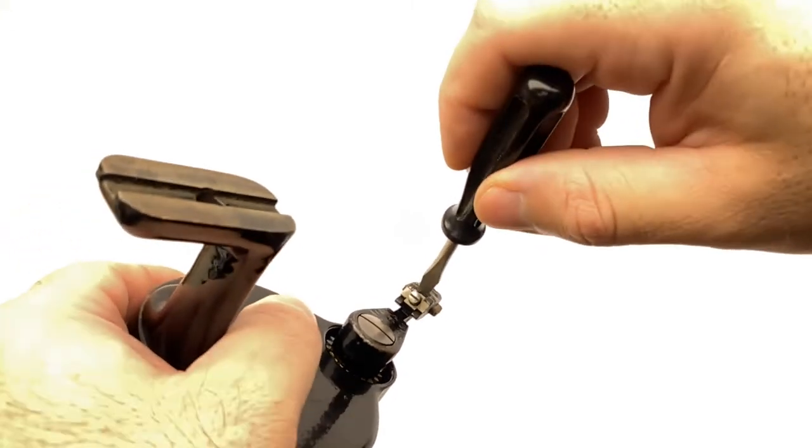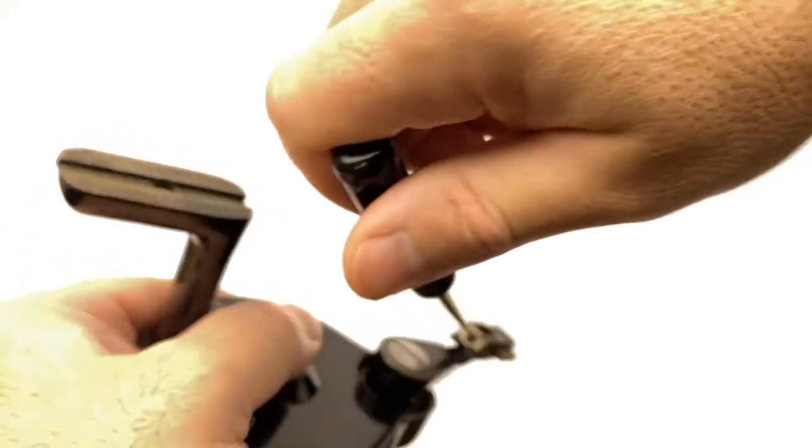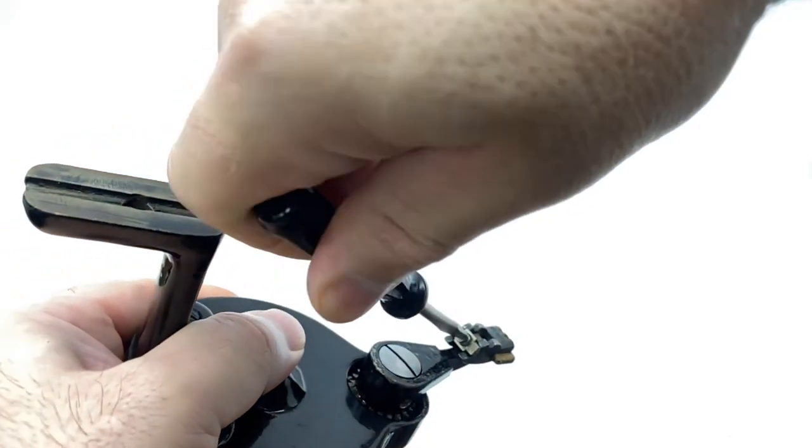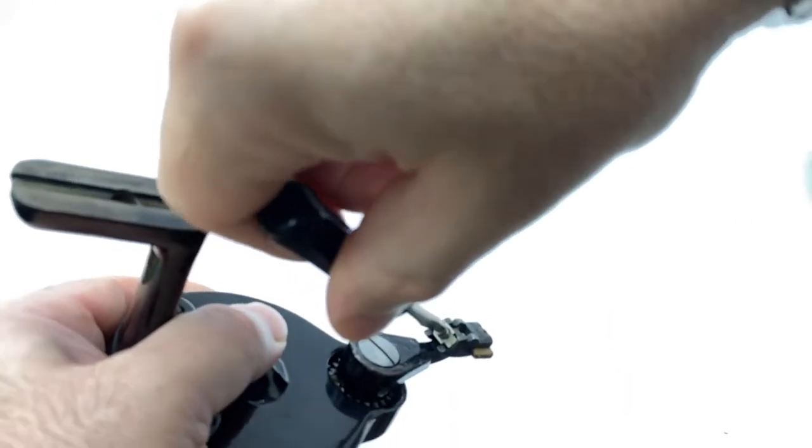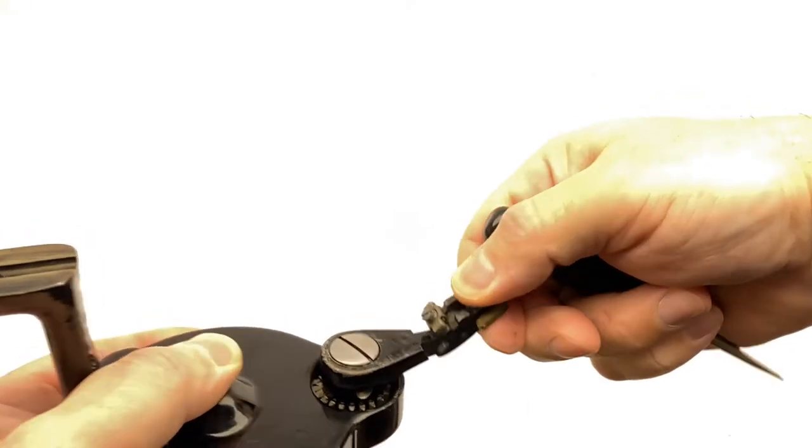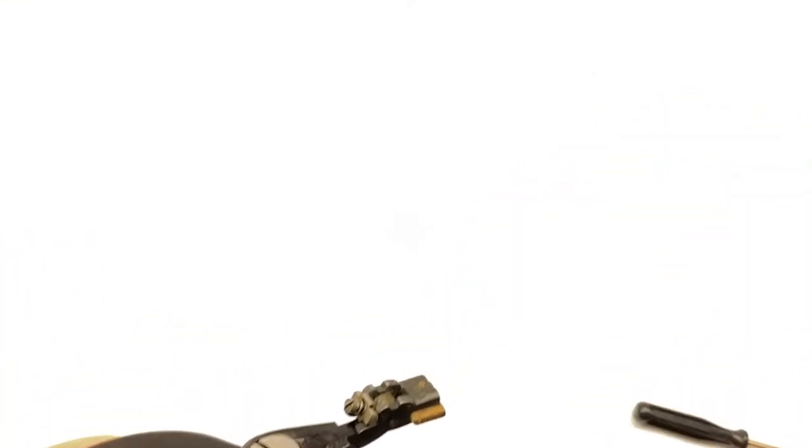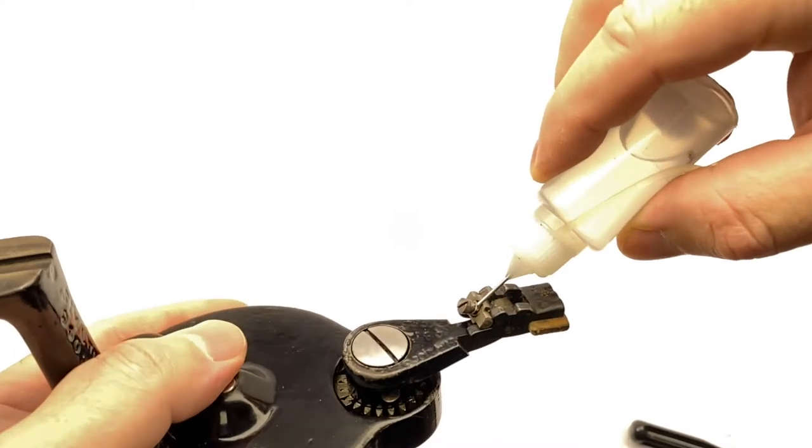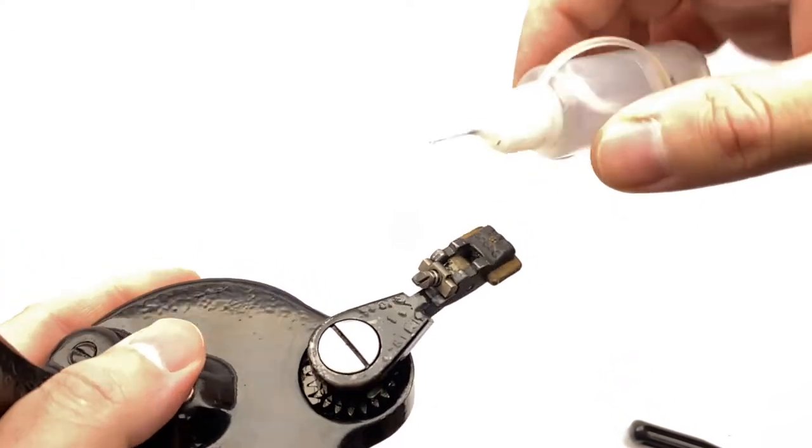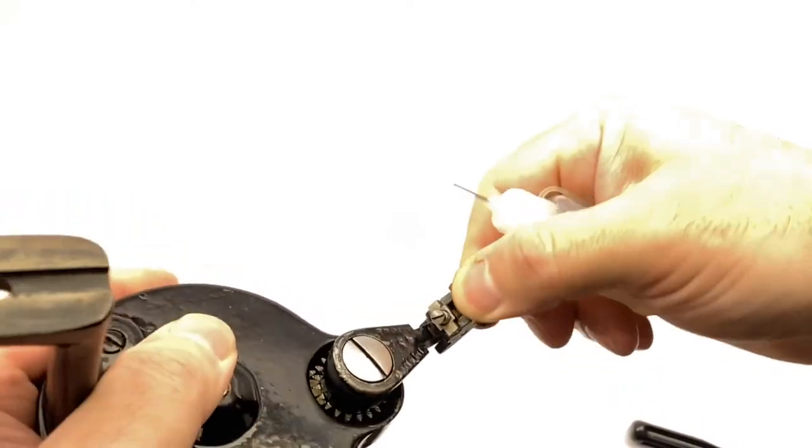You need to unscrew the screw a bit, set it free, and this loosens the joint. A little bit of oil is never a bad idea. It's going to move freely after that.